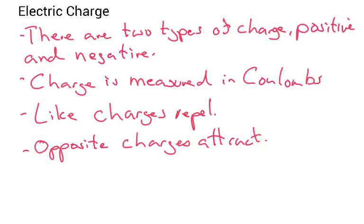There are two types of electric charge, positive and negative. Charge is measured in coulombs. Like charges repel, and opposite charges attract.